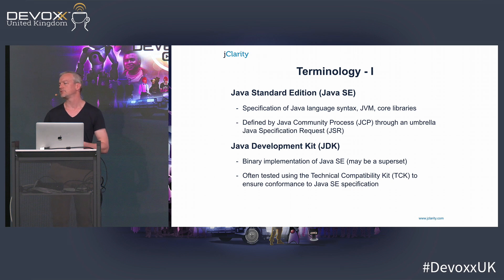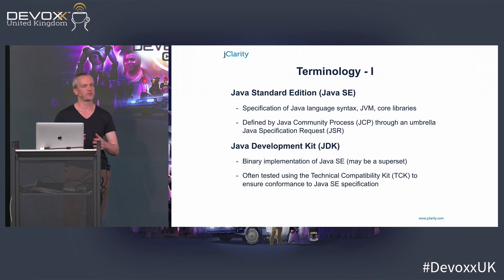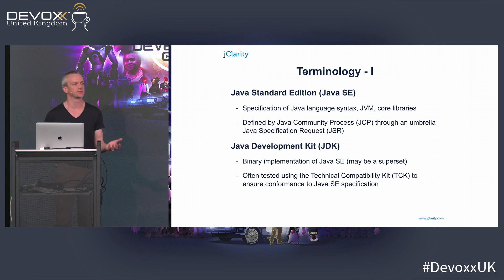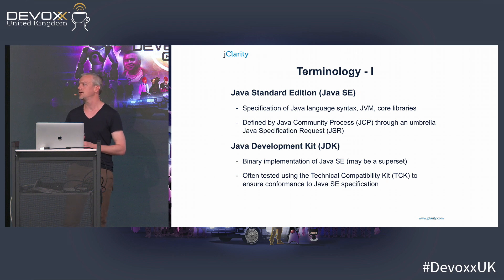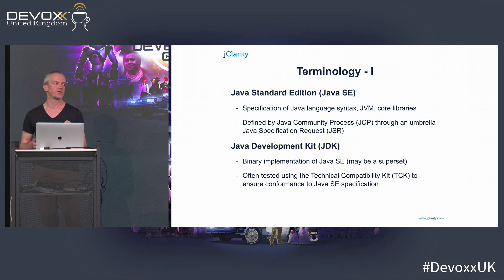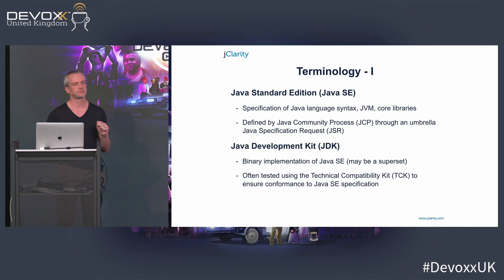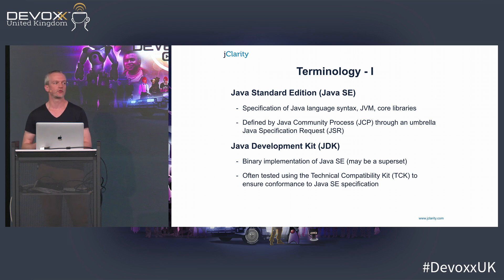You'll get an umbrella JSR for Java 8, Java 9, 10, 11, and within that you'll have functional JSRs — so things like when Lambdas came out, that had a JSR covering it, the module system, and so on. You have a Java Development Kit, and it's often tested using the Technical Compatibility Kit, or the TCK. To be able to call yourself Java, or to say you have met the Java specification, your distribution must pass the TCK. That's one of the things you may want to look out for if you're going to choose a new distribution going forwards.